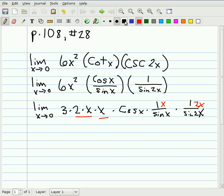And you can see that when we do that, we end up with the limit as x approaches 0 of 3 cosine x times x over sine of x, times 2x over sine of 2x.